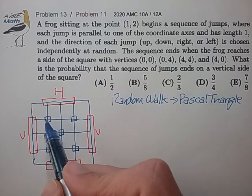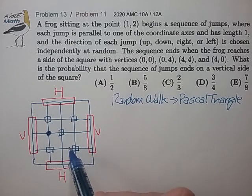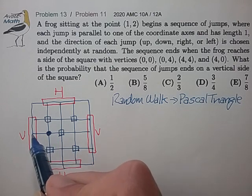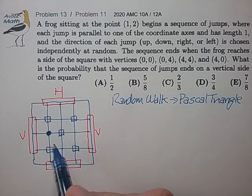So the probability starting from any of these symmetric points is quite easy to calculate. It's going to be one half for the vertical ending point and one half for the horizontal ending point.